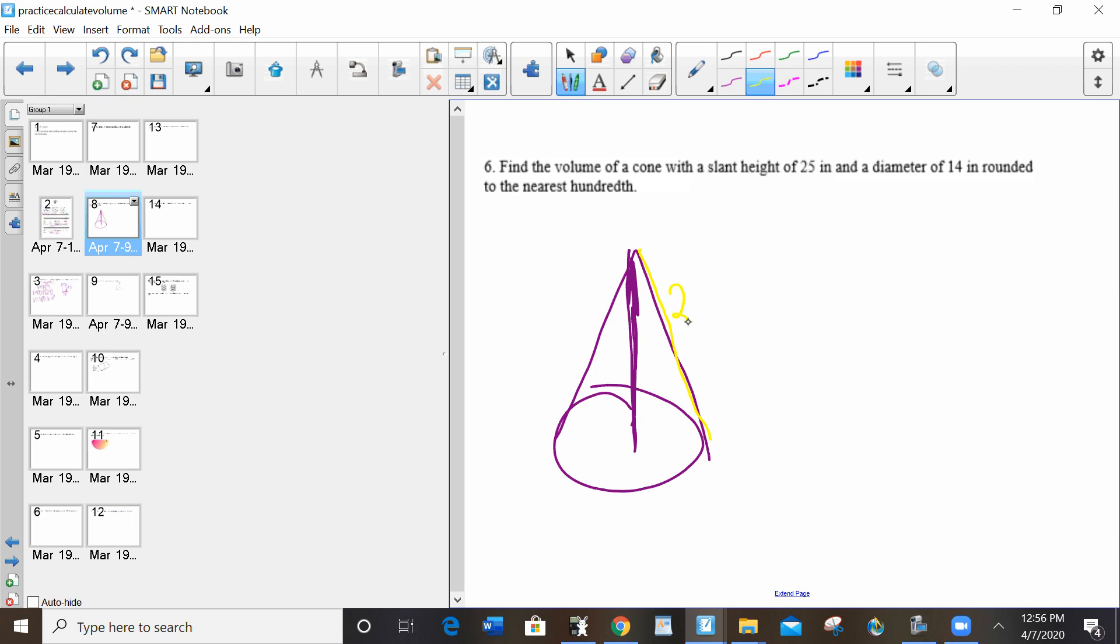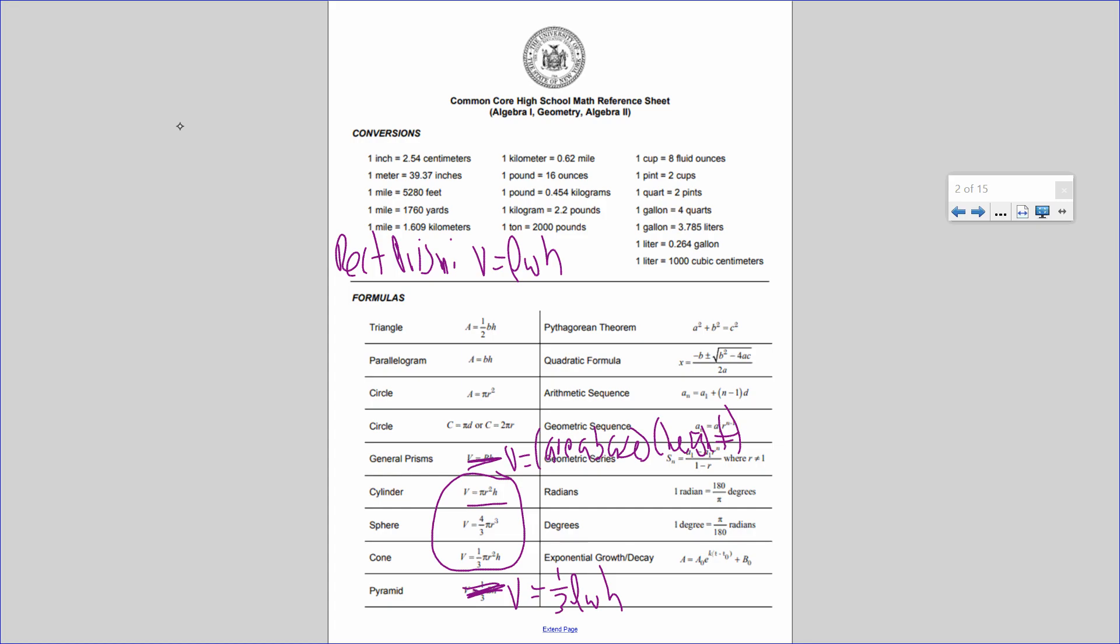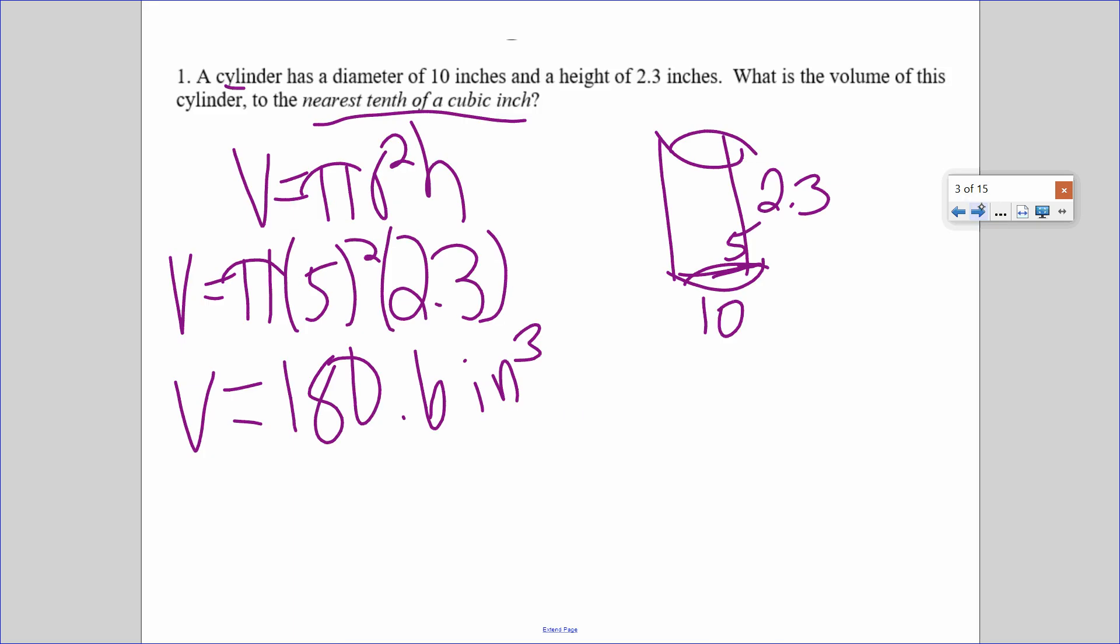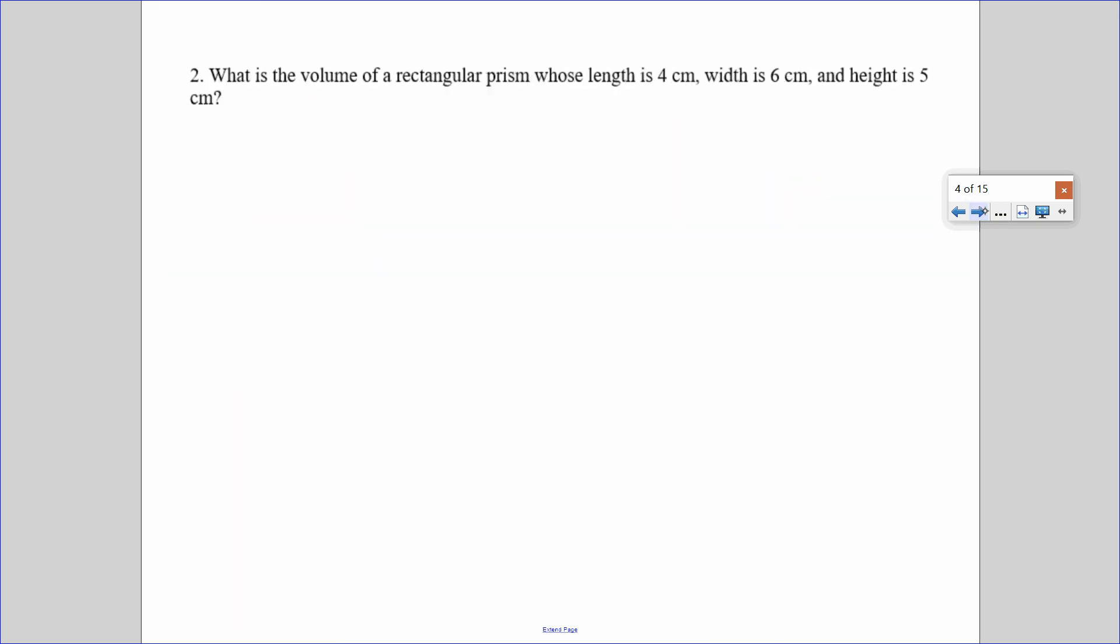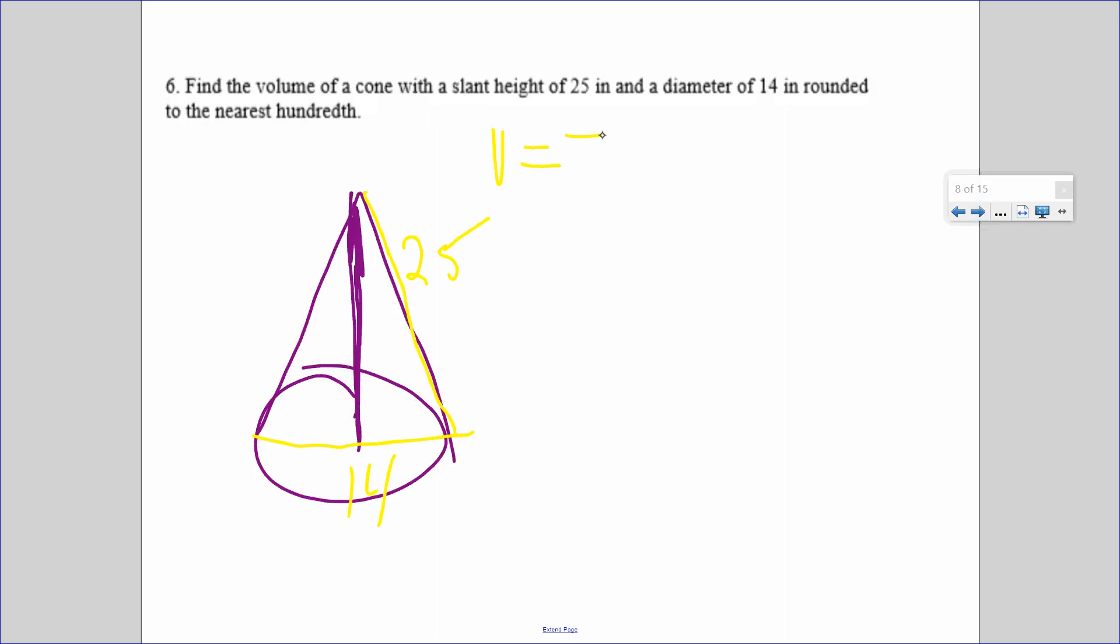Now, height is this right here. Height is the altitude. Height is straight up and down. Slant height is exactly what it sounds like. It's the height of the slanted piece of the cone. So the slant height is 25. The diameter is 14. And it's asking for the volume. Well, I go to my reference sheet. Volume of a cone is one-third pi r squared h.